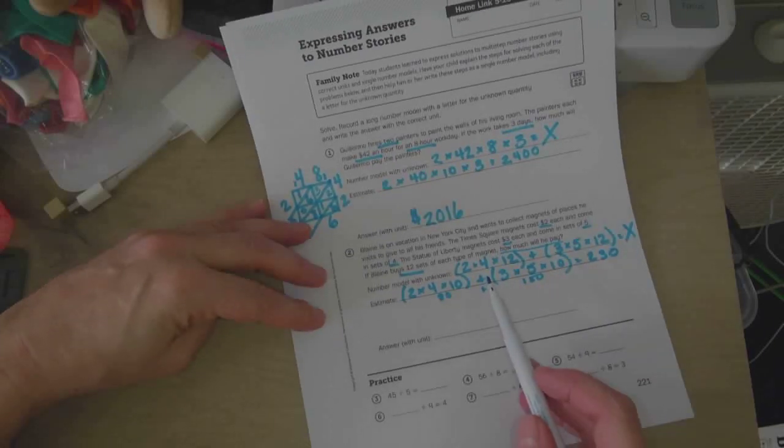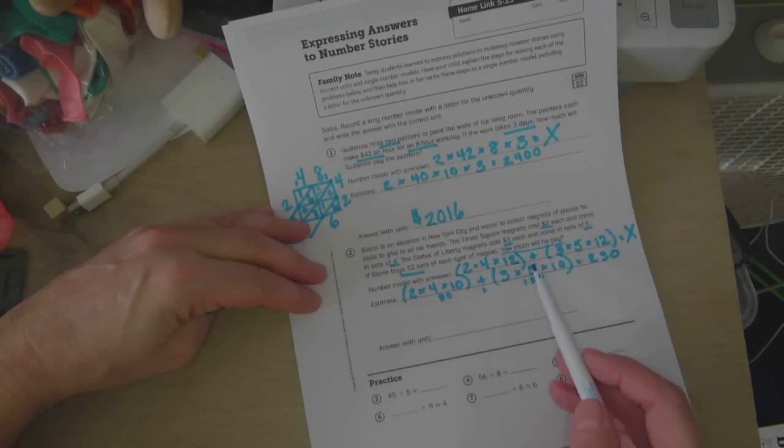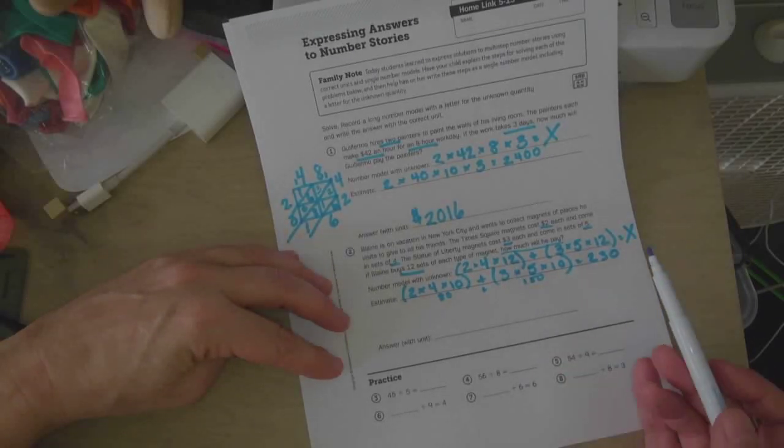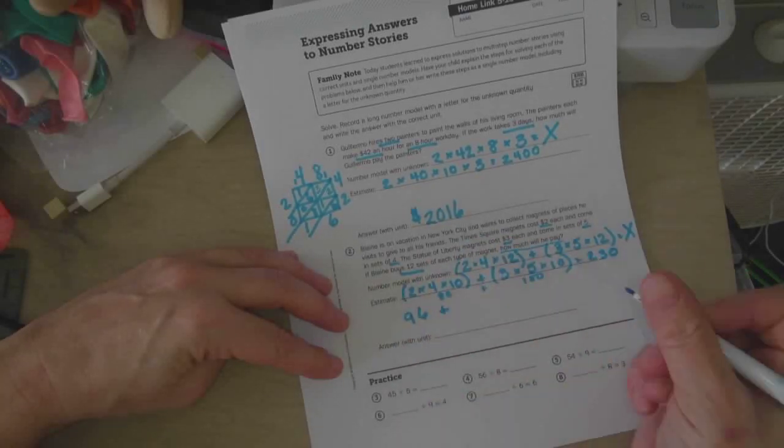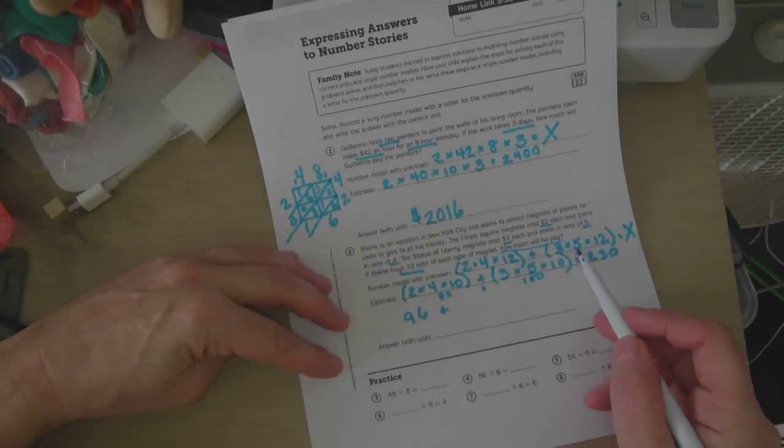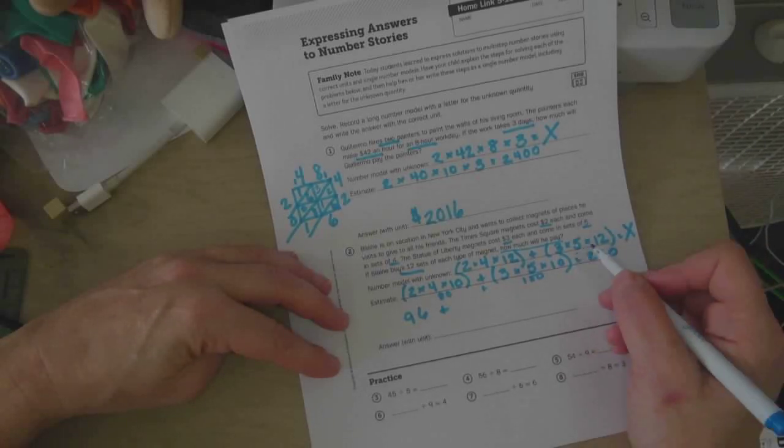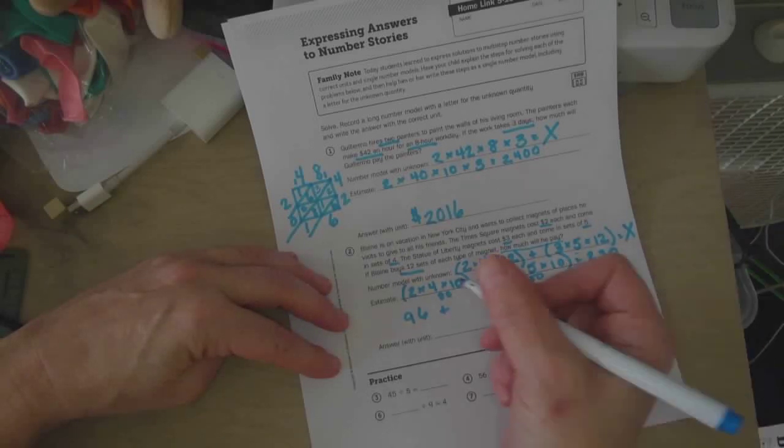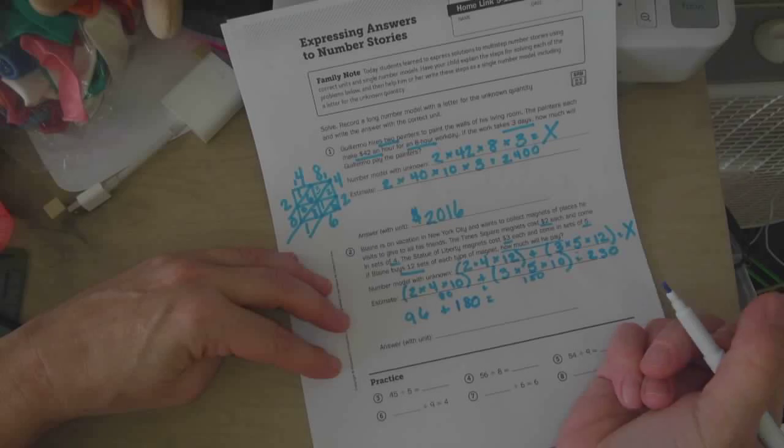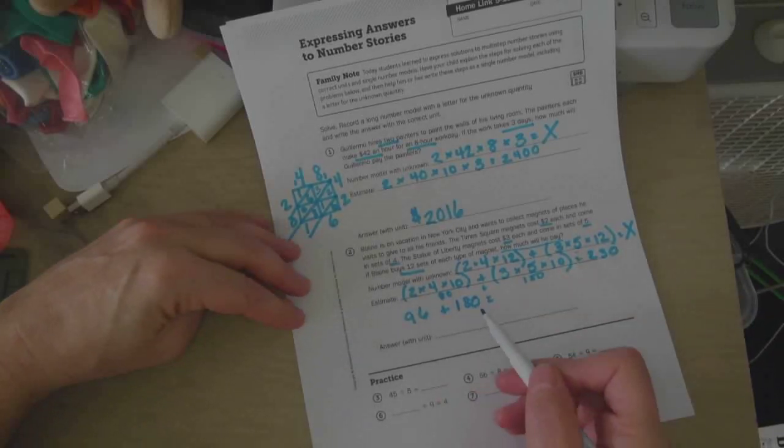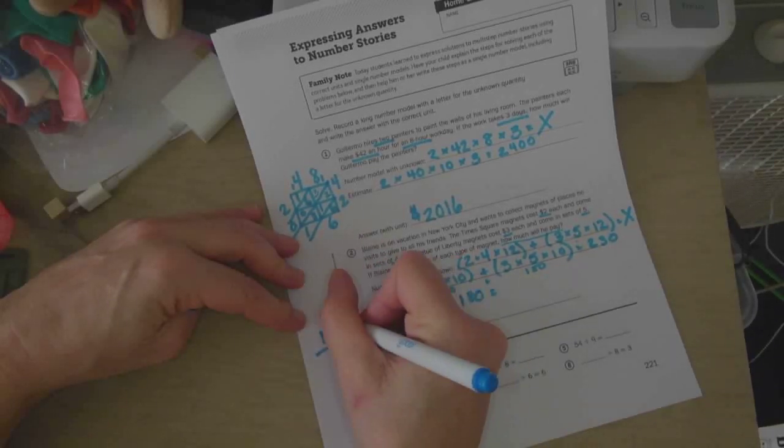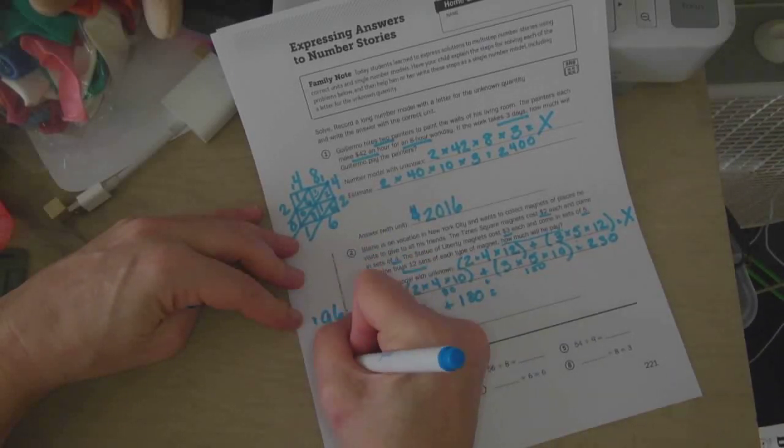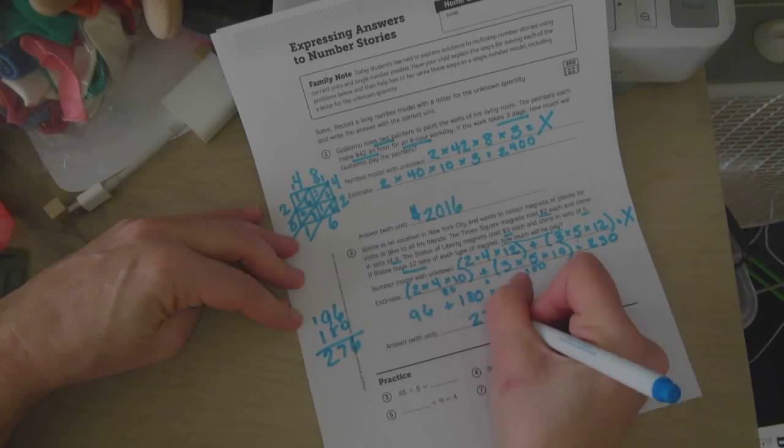So now let's do the actual computation. So 2 times 4 is 8, 8 times 12, you know your 12's facts, so 8 times 12 is 96. So 96 plus, and this one, 3 times 5 is 15, 15 times 12, that's not as easy, but 5 times 12, we know that that's 60, and 60 times 3, we know is 180. So 96 plus 180, 6, 5 plus 8 is 17, so our answer is $276.